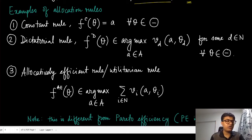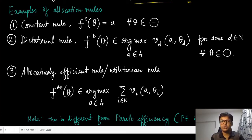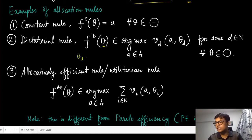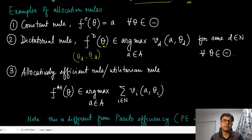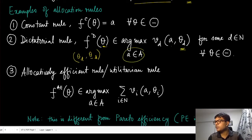The second rule is known as the dictatorial rule. We identify a specific player called the dictator and pick the allocation that maximizes that player's valuation, ignoring all other players' types. Even though the type vector has many components — theta_d for the dictator and theta_{-d} for all others — this allocation function only looks at the dictator's type, picking the allocation that maximizes their valuation.